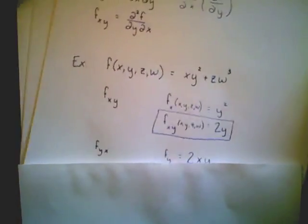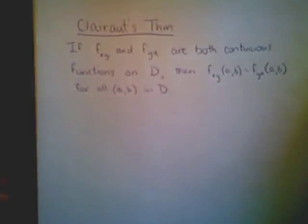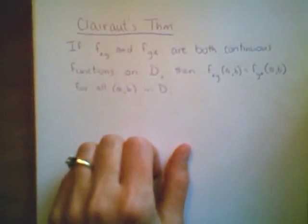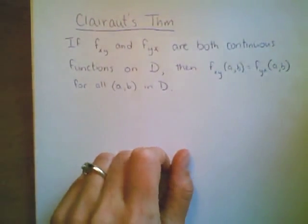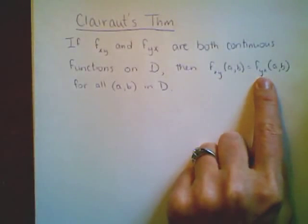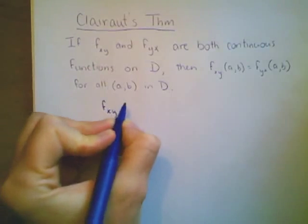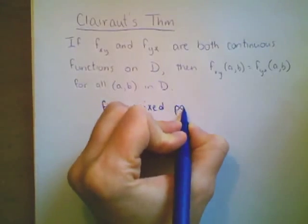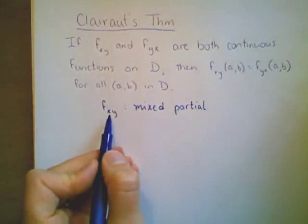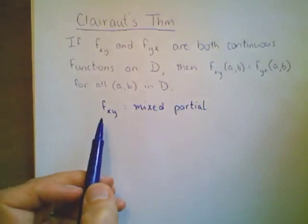Both orders gave the same answer — 2y. This is one example that does not prove the general case, but it is in fact the general case. This is Clairot's Theorem. Clairot's Theorem states that if f sub xy and f sub yx are both continuous functions on some domain D, then the mixed partial f sub xy equals the mixed partial f sub yx for all points on that domain D. We call f sub xy a mixed partial derivative, because it mixes both input variables x and y. We didn't prove this theorem, but we saw one example of when it holds.